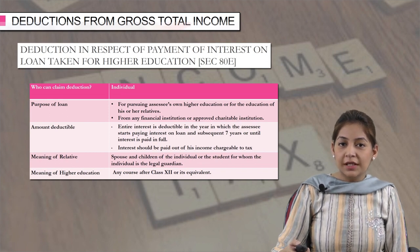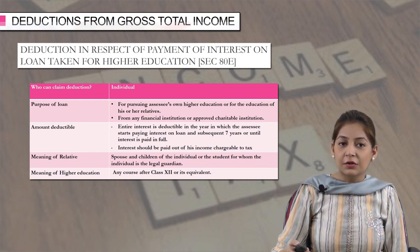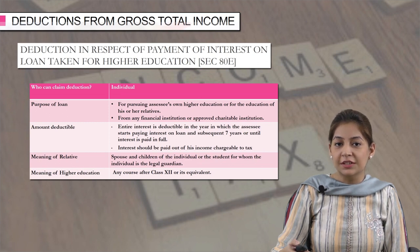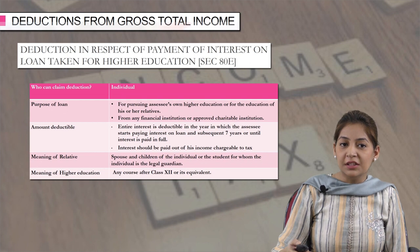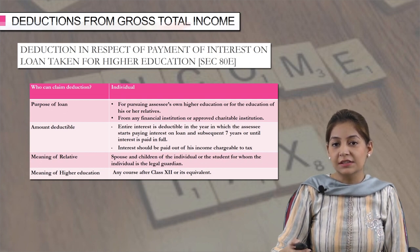The loan can be taken for the education of the assessee himself or for the education of his or her relatives. Here the term 'relative' means the spouse and children of the individual, or the loan may be taken for any student for whom the individual is the legal guardian. Higher education means any course after class 12th or its equivalent.